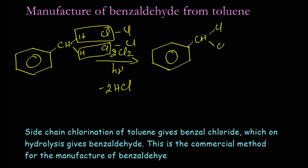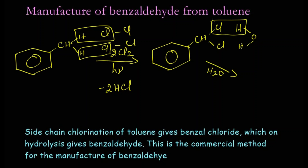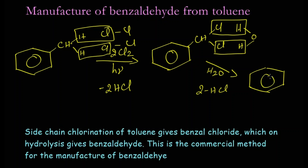Then we are going to hydrolyze it by adding H₂O. Two molecules of HCl will get eliminated, and the remaining oxygen gets attached to this carbon, giving us C double bond O — that is, a CHO group.